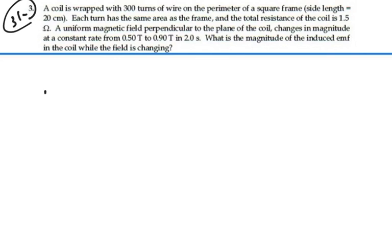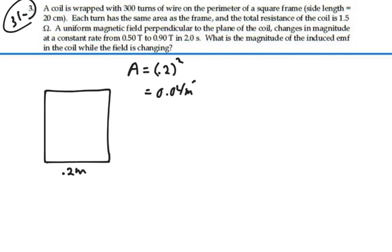So we have a coil. It's a square frame. It is 0.2 meters on a side. So the area of this coil is going to be 0.2 squared, which will be 0.04 square meters.